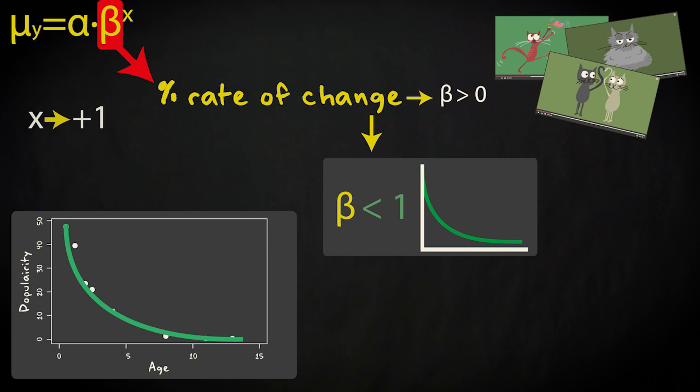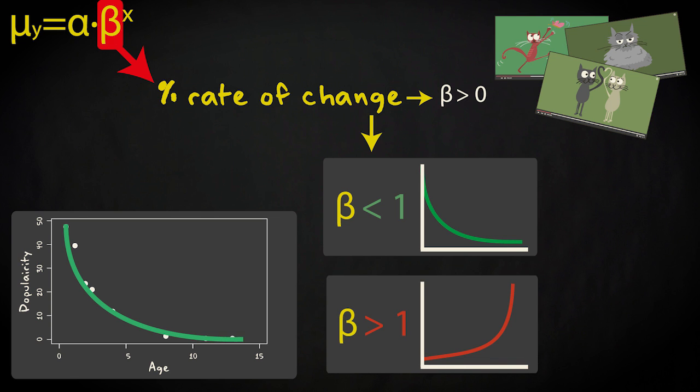In our example, as x increases by one unit, a β of 0.6 will result in a 60% decrease in the predicted value compared to the previous predicted value. If β is larger than one, the function increases. If β equals one, well, it's no longer an exponential function.